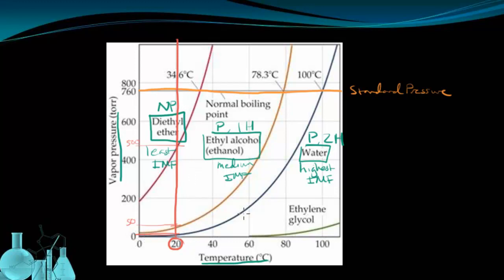And you can repeat this process for any one of these temperatures, and you're going to see the same thing. That at any given temperature, the substance with the least amount of intermolecular forces has the highest vapor pressure, and it has a high vapor pressure because it's unable to hold onto its molecules through intermolecular attractions.